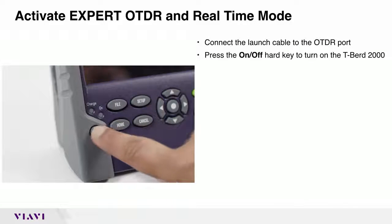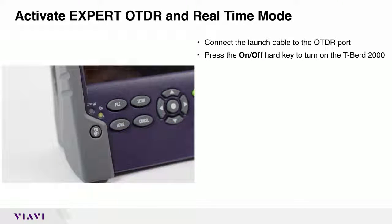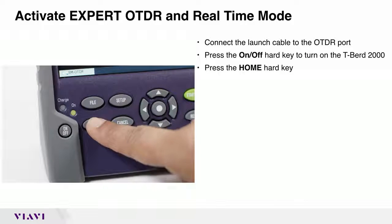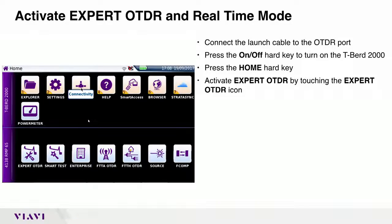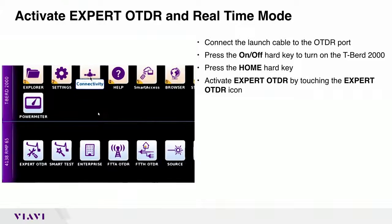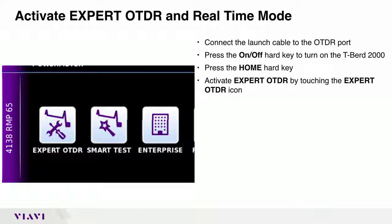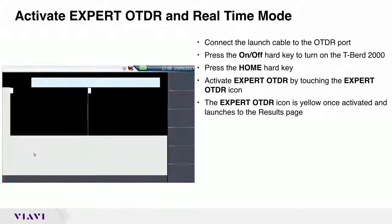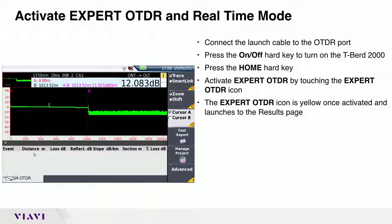Press the on-off hard key to turn on the TBERD 2000. Press the home hard key. Activate expert OTDR by touching the expert OTDR icon. The expert OTDR icon is yellow once activated and launches to the results page.